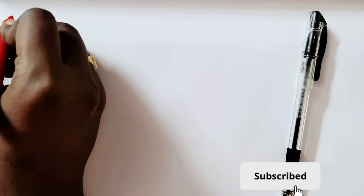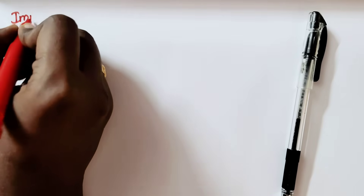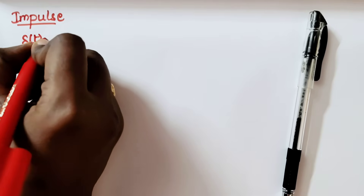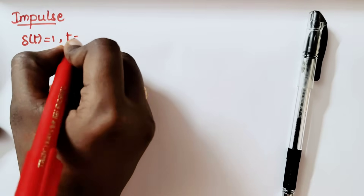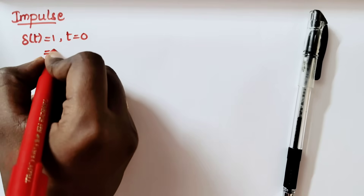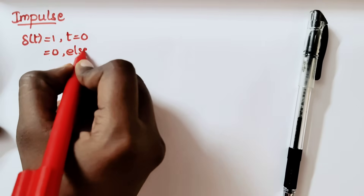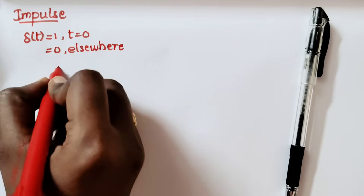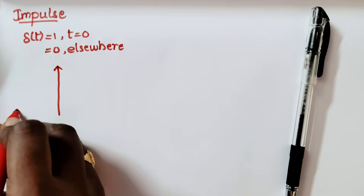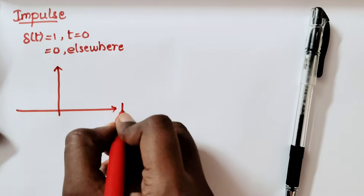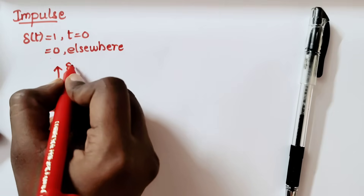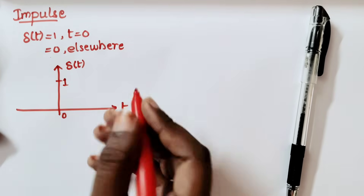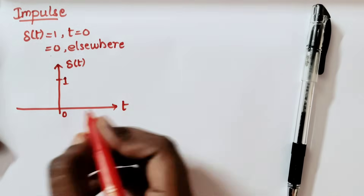Firstly, we must know what is an impulse signal and its representation. The impulse signal can be represented as δ(t) equals 1 at t equal to zero and equals zero for all other values of t. The signal representation of the impulse signal will be 1·δ(t), and at t equal to zero its amplitude equals 1. So, what are the properties of the impulse signal?